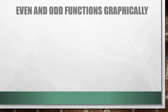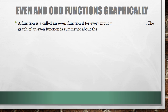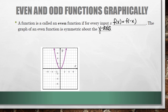Let's first start with even and odd functions graphically. A function is called an even function if for every input x, f of x equals f of negative x. The graph of an even function is symmetric about the y-axis. Here is an example of an even function graph. You can see that it is symmetric about the y-axis. If I took this half and reflected it about the y-axis, I would get the other half of the graph.